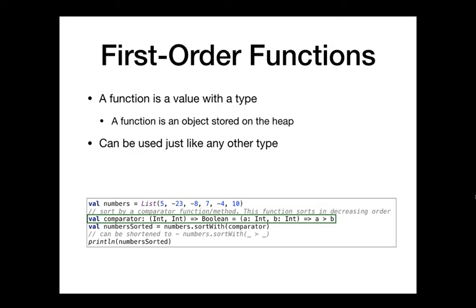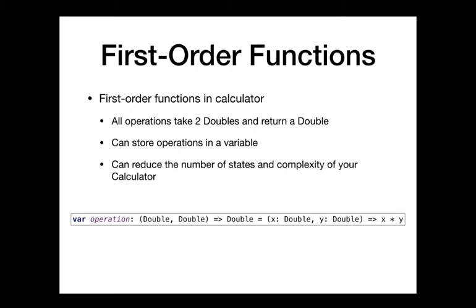So the first implication: if you're doing the calculator assignment, I have this hint at the end of the document labeled as an advanced hint. It's no longer advanced anymore because now it's just part of the content that you know. One of the things you can do is store one of the four operators in a variable. There are cases in your calculator where when you hit the equal sign, you have to think about which of the four operators should be used in the evaluation.